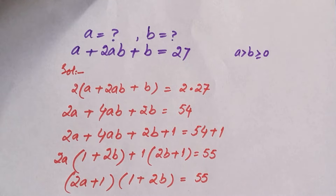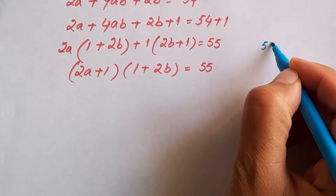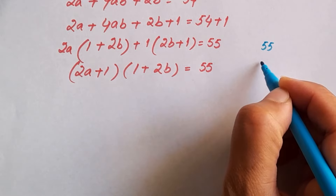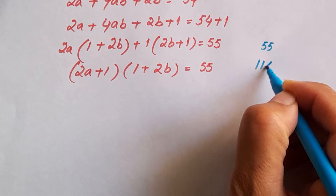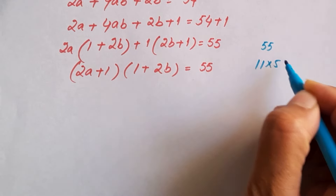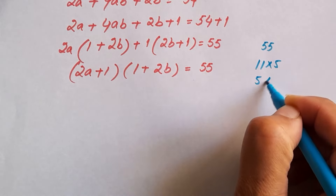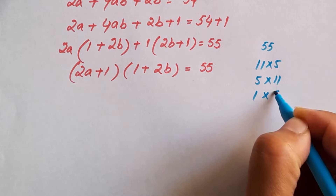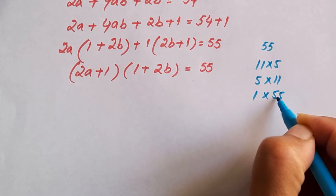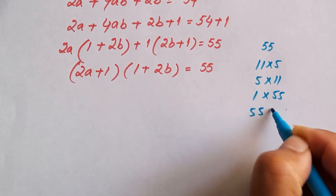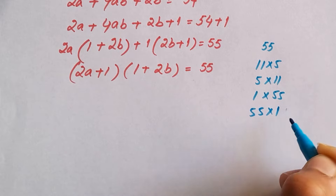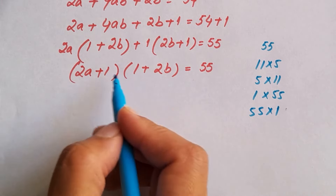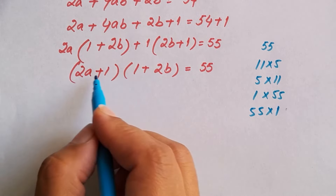For 55 we also need to find the factors. The factors of 55 are: 11 times 5 is 55, 5 times 11 is 55, 1 times 55 is 55, and 55 times 1 is 55.